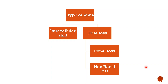Now, what are the causes of hypokalemia? Hypokalemia can occur because of either an intracellular shift — the small amount of potassium present extracellularly moves intracellularly — or there can be a true loss of potassium. True loss can occur via the kidneys excreting excess potassium in urine, or through non-renal loss.